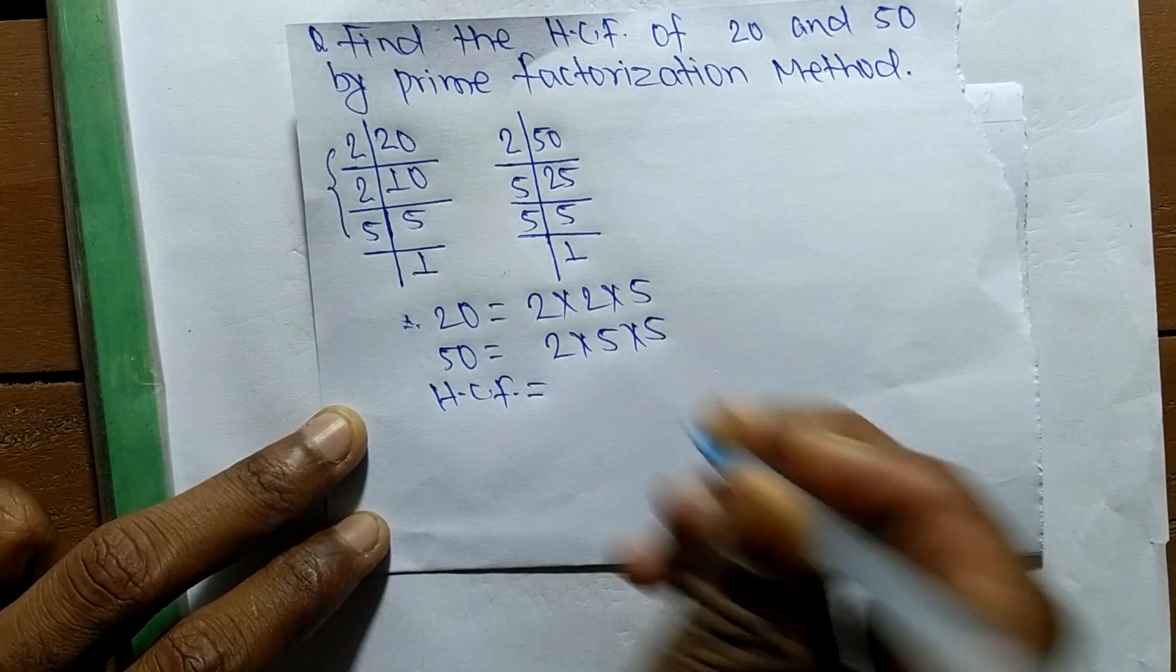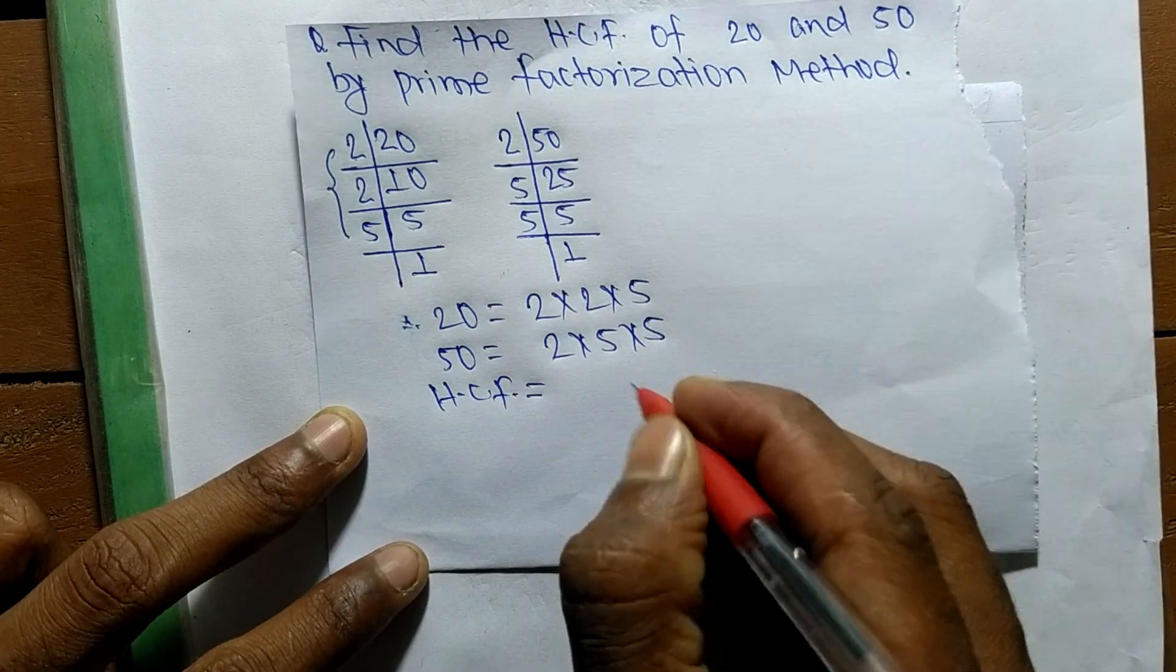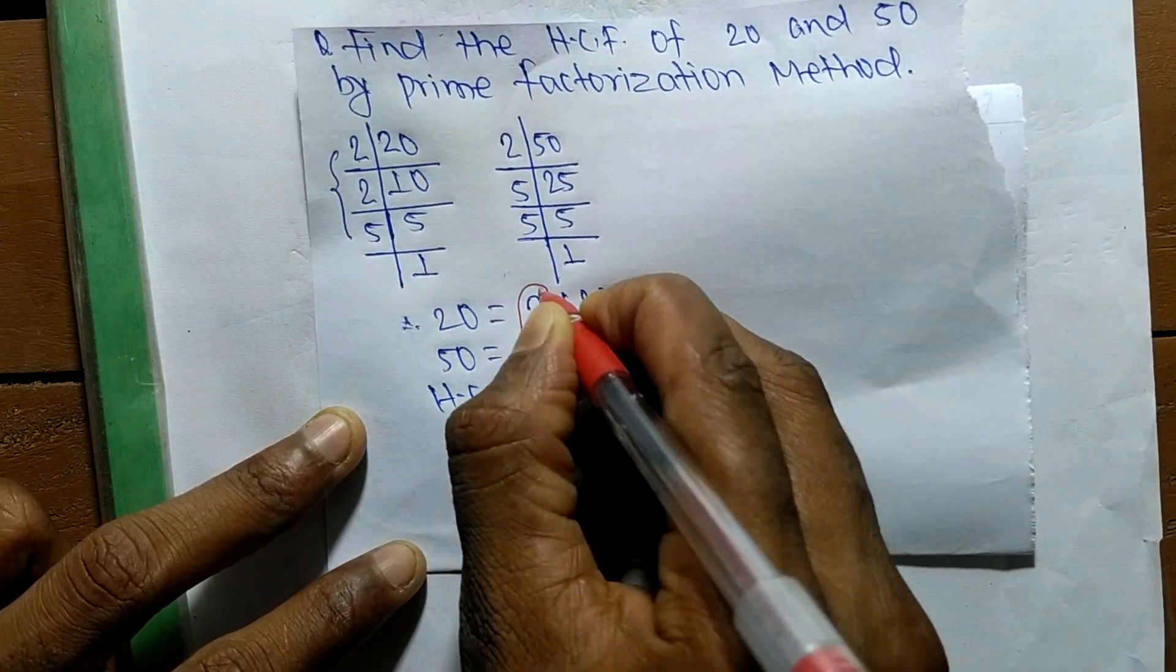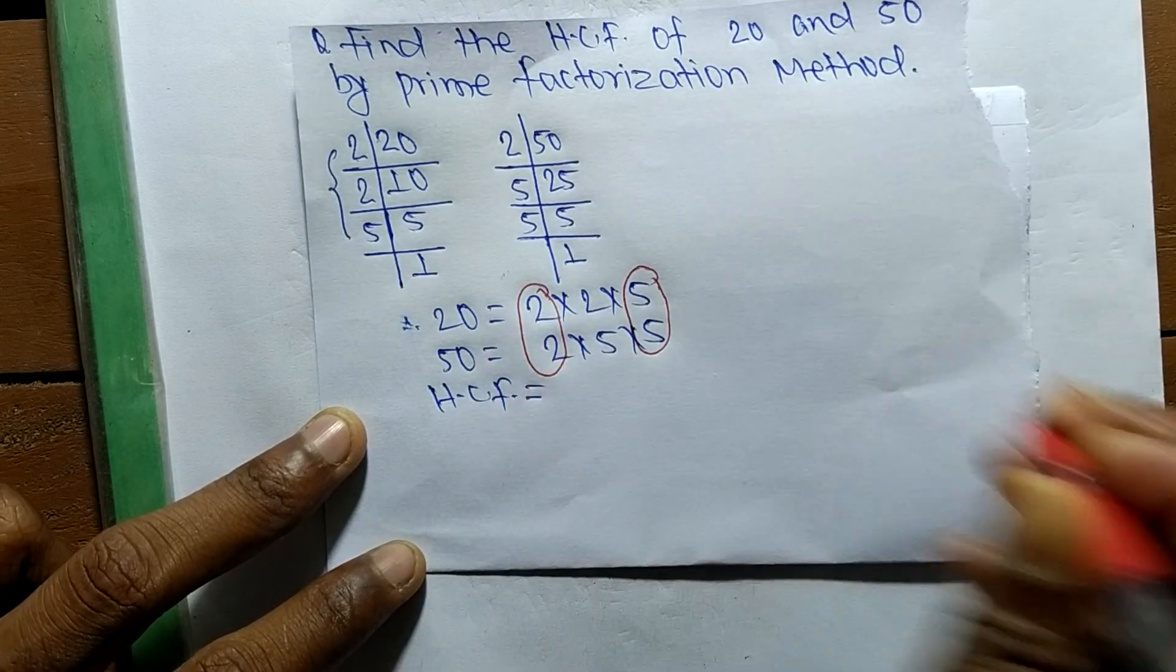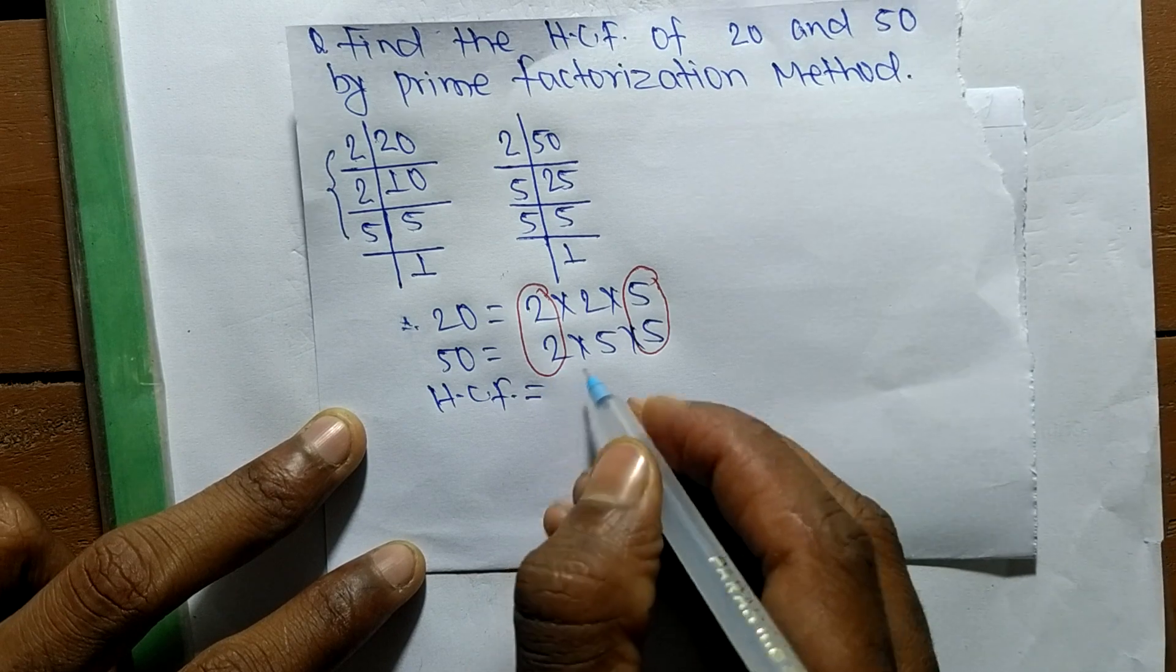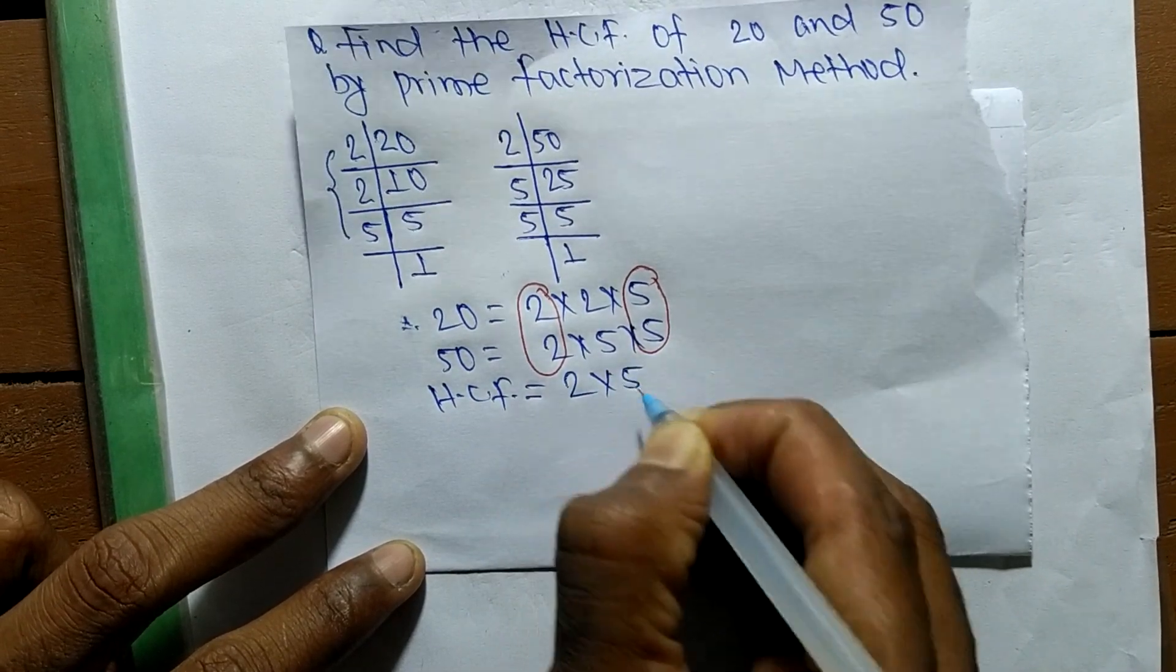So the HCF is equal to... now we have to find out the common factors in the prime factors of 20 and 50. It is 2 and 5, so HCF is the product of common factors 2 and 5.